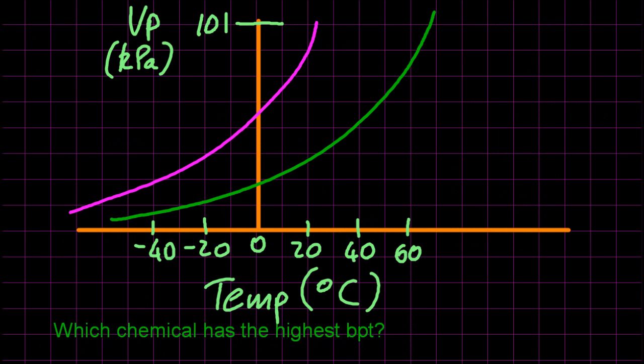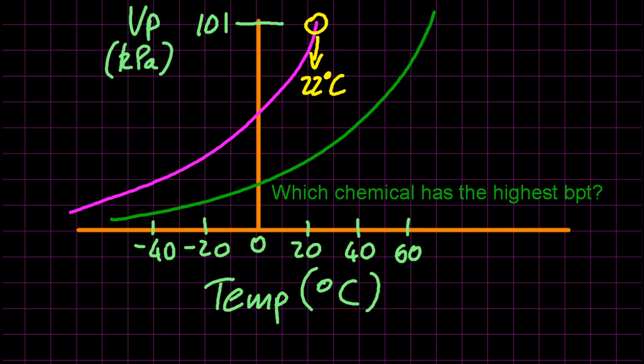So looking at this different graph, which chemical has the highest boiling point? Well, let's just see when the vapor pressure equals atmospheric pressure. So the boiling point of the purple line is 22 degrees C, and of the green line, 67 degrees C. So the chemical with the highest boiling point is the green one.